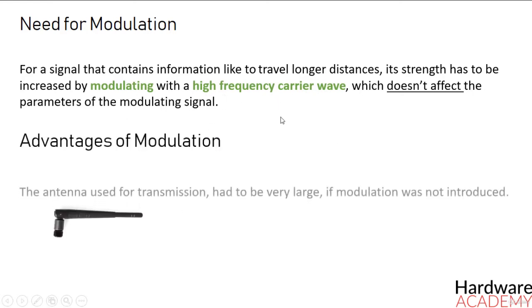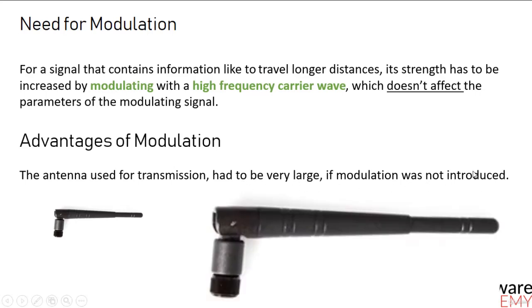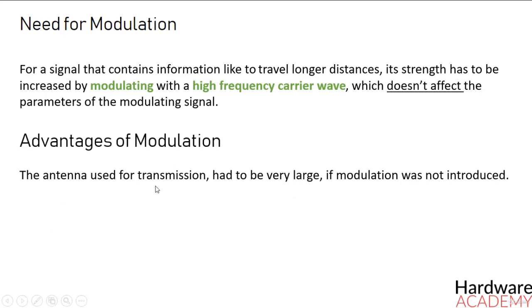The antenna used for transmission had to be very large if modulation was not introduced. The range of communication gets limited as the wave cannot travel to a distance without getting distorted.